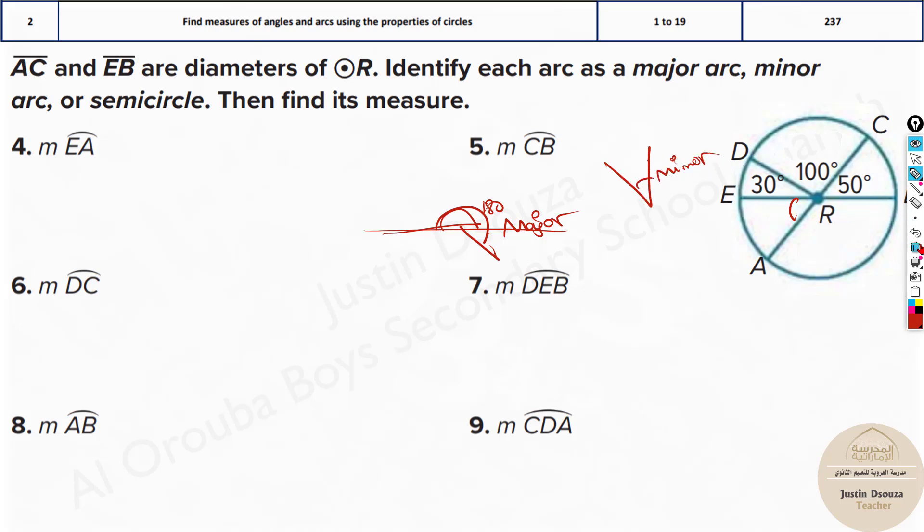Now how can you find the arc EA? To find arc EA just find this angle and you will find it out. So how we can do it is, you know AC is 180 degrees, isn't it? You have 130, what is this remaining? 180 minus 130 will be 50, so it's a minor arc and 50 degrees.